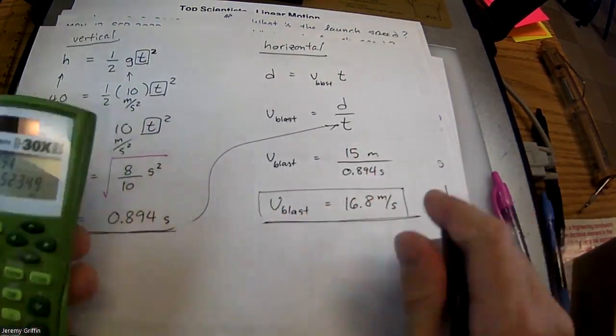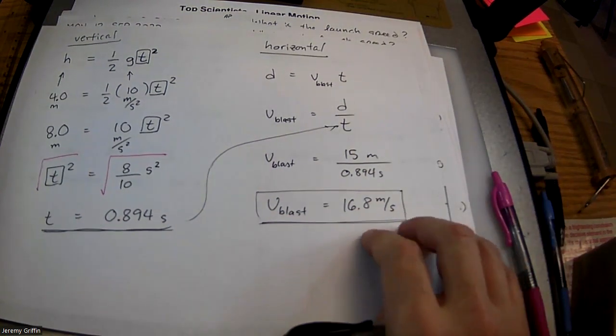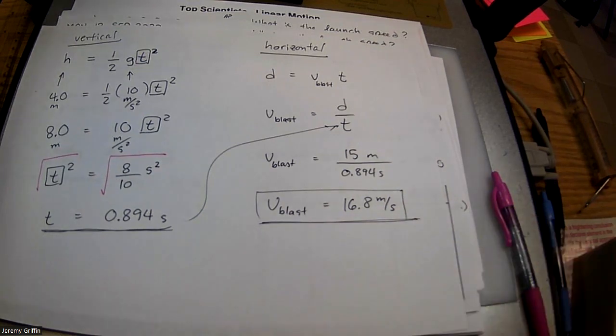Now, yours doesn't have to be the same number. Remember, you guys had different mass balls. You guys had different launch cannons. So if you got somewhere between like 5 and 20, you know, that's like the right order magnitude. You got anywhere in there, you are good to go.